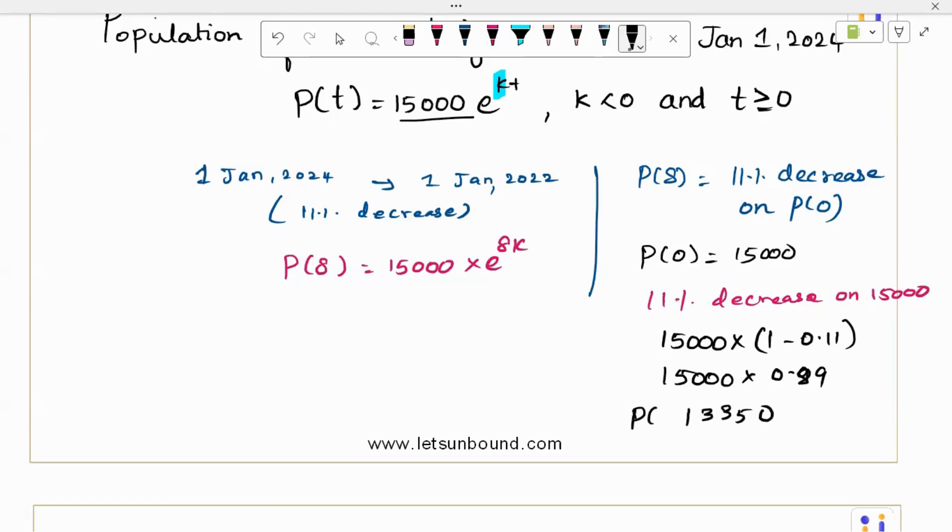So this is initial, this is the population at 8. We can equate it. After 11% decrease, we will be at the 8th year and P of 8 is this. Now we can use this here. P of 8 is 13,350 equals 15,000 times e power 8k. And we need to solve for it. Let's go for an equation solver.